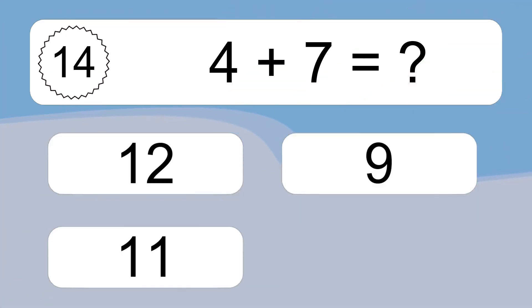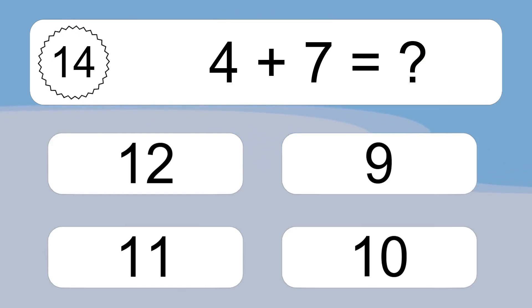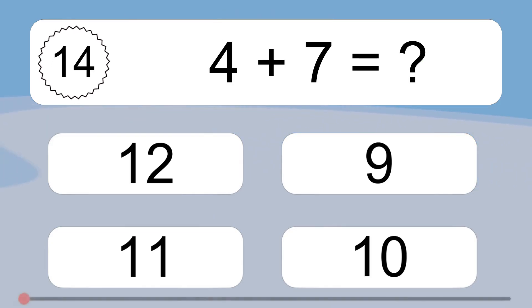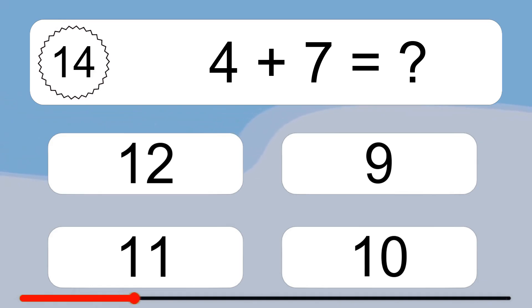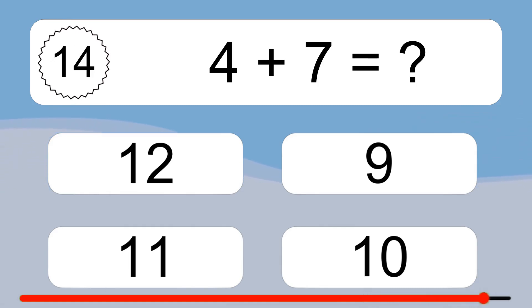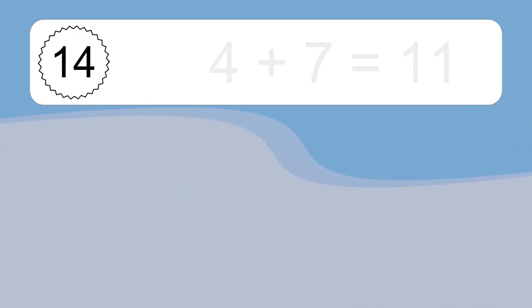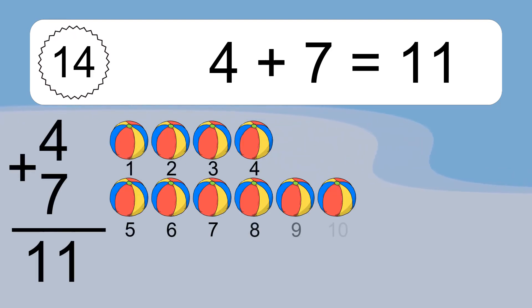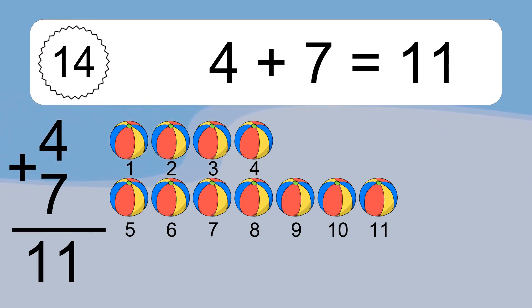4 plus 7 equals what? 4 plus 7 equals 11. Let's count it: 1, 2, 3, 4, 5, 6, 7, 8, 9, 10.